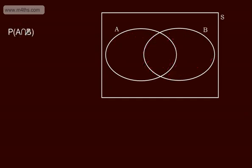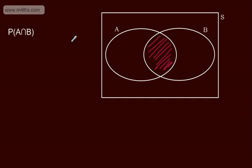The probability of A intersection B is the probability of both A and B happening at the same time. So that's this part right here. We read this as A intersection B — just this part right in the middle.